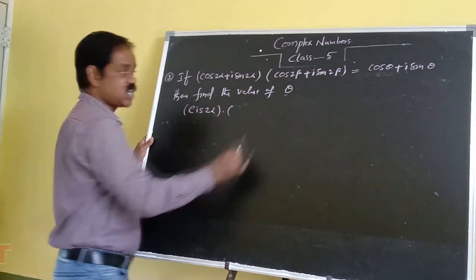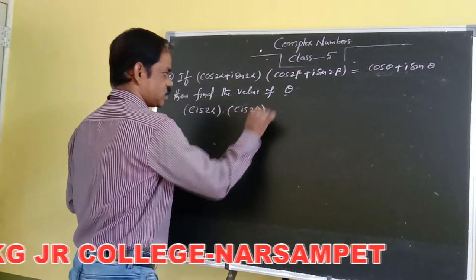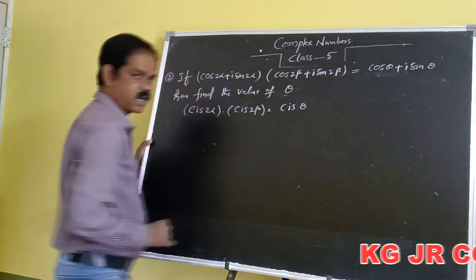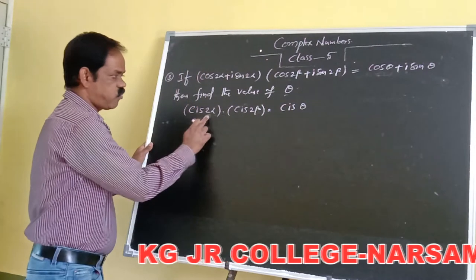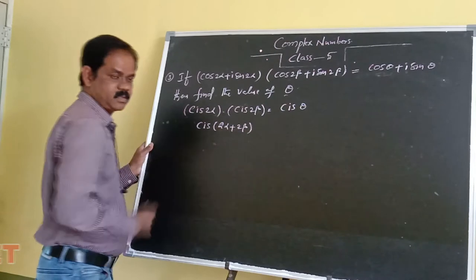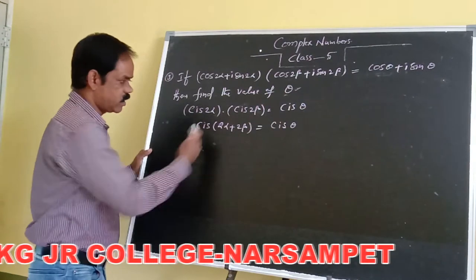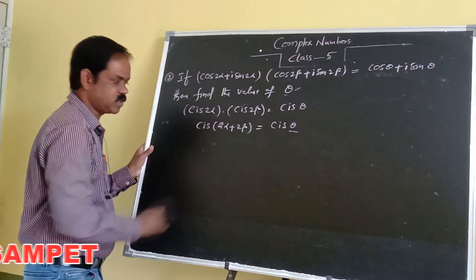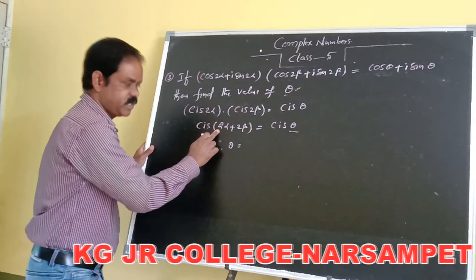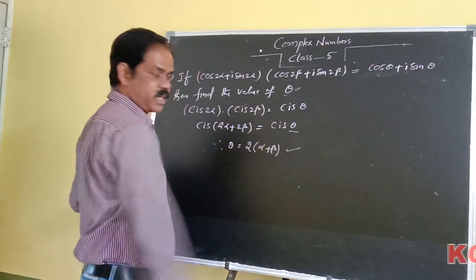The short form of cos 2 beta plus i sin 2 beta is Cis 2 beta, and the short form of cos theta plus i sin theta is Cis theta. Applying the second formula, Cis 2 alpha into Cis 2 beta is equal to Cis of 2 alpha plus 2 beta. Comparing both sides, theta is equal to 2 alpha plus 2 beta, which equals 2 of alpha plus beta. This is the correct answer.